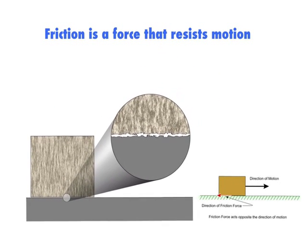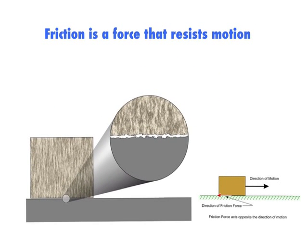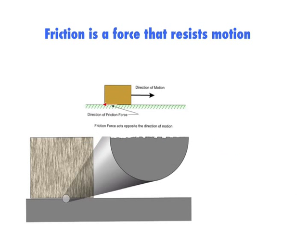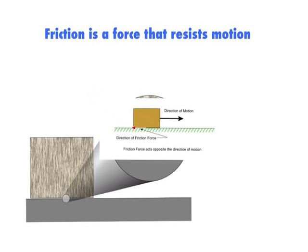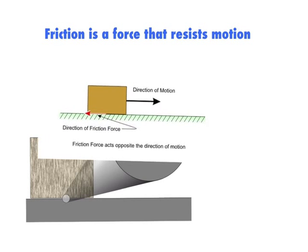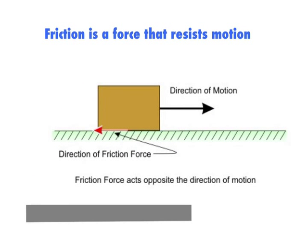When we do a force diagram, we would always make friction oppose the direction of motion. So if you're pulling the block this way, we always draw friction as working against you.